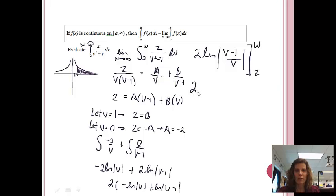If I evaluate it at w, I'll get 2 ln w minus 1 over w minus 2 ln, if I put 2 in here, I'm going to get 2 minus 1 is 1, I'll get 1 half. So we found the integral. Now what I have to do with it is find the limit as that approaches infinity. So I'm going to add to the front of my problem, now we want to find the limit as w approaches infinity.